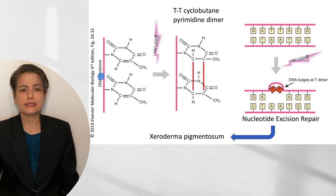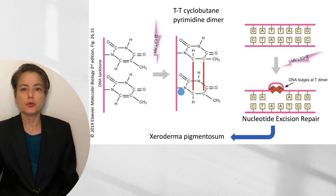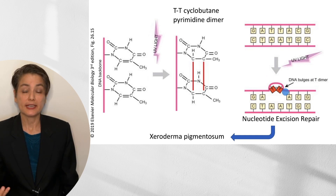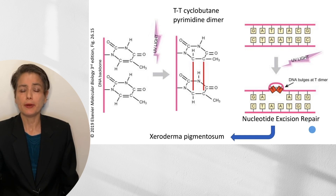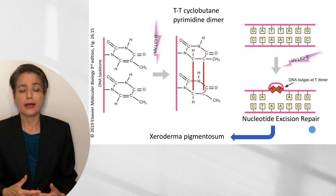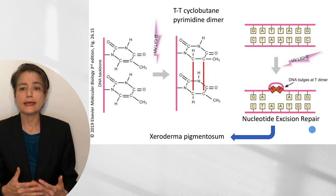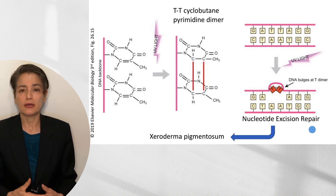Here we can see a DNA backbone with two thymine residues. If you hit this with UV light, the carbon double bonds absorb that energy, forming a cyclobutane ring. When this happens, you no longer have the neat fitting together of your bases — you get bulging, which the cell will sense. Nucleotide excision repair is then initiated to replace the lesional area. The importance of this pathway is highlighted by xeroderma pigmentosum, caused by mutations in nucleotide excision repair genes, which predisposes individuals to cutaneous squamous cell carcinomas and basal cell carcinomas.